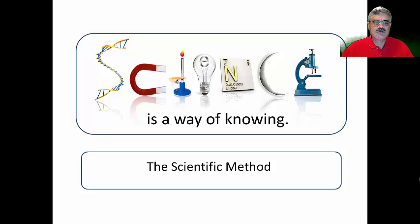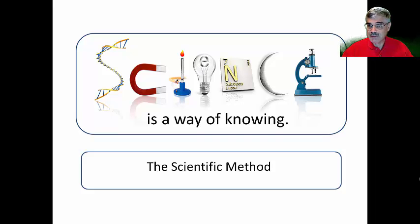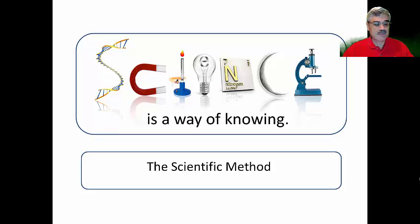Hello class. We're going to continue our discussion of this chapter on science, a way of knowing. In the previous two chapters we've talked about mathematics and units of measurements, including the metric system. In this video lesson we're going to talk about the scientific method — this formal process that describes how science is done in the most ideal sense. Science can occur in a lot of different ways, but we like to refer back to this very formal way in which science can be done or should be done.